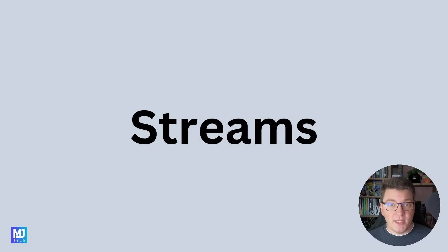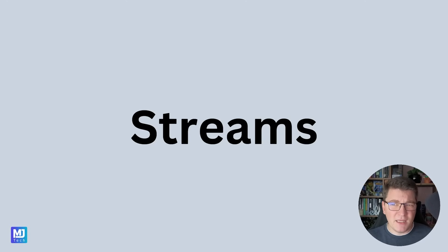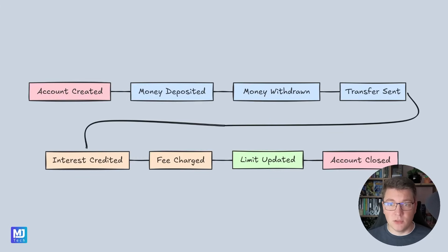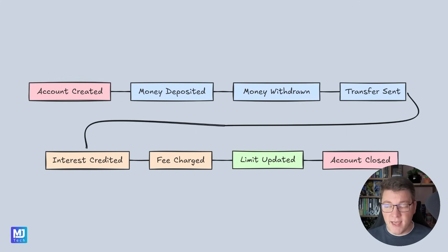We have streams. Streams represent a stream of events — an append-only log of events for a given identifier. How do we uniquely identify a stream? Typically this is going to represent your domain entity or aggregate, and you will be storing the events that occur in this aggregate in a single stream. In our bank account example, we will first have an account created event, then any number of deposited or withdrawn events, maybe sending some transfers, and if we take a line of credit, we also have to be charged some interest. The lifetime of this stream completes when we encounter the account closed event.